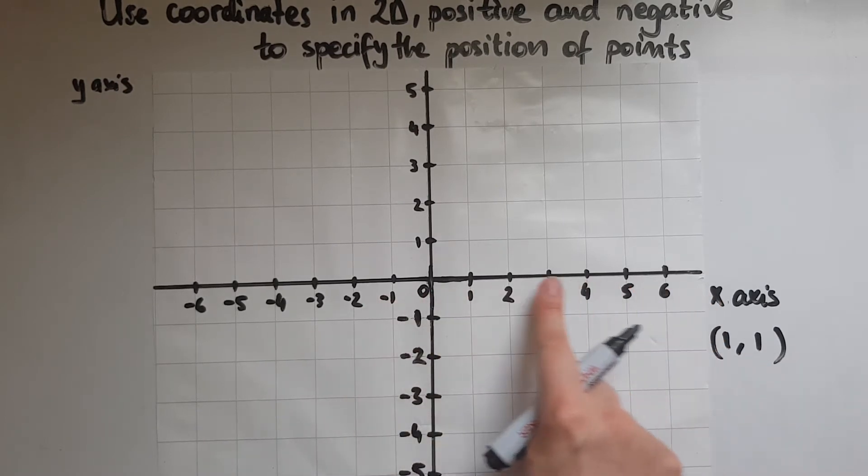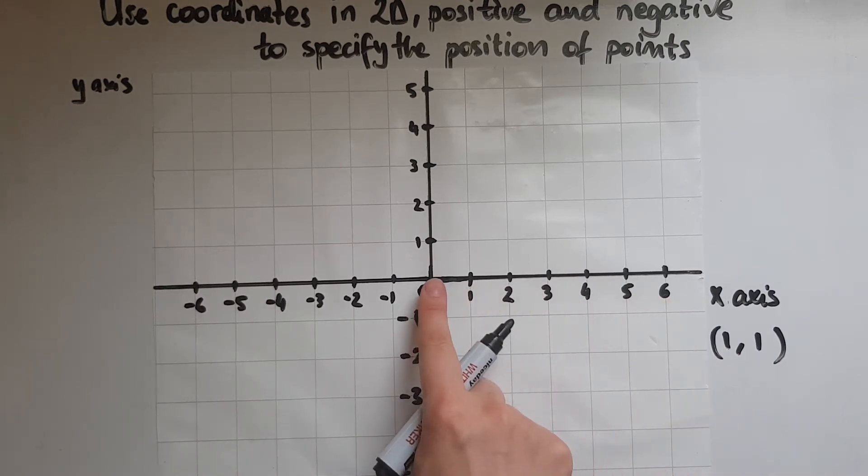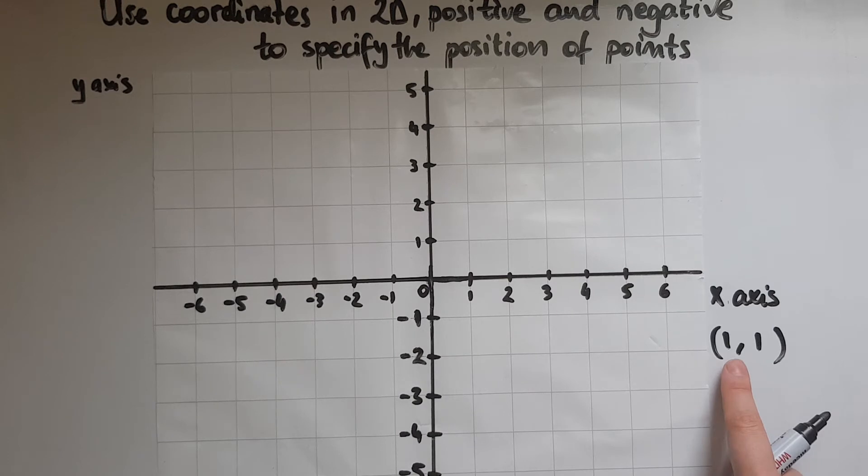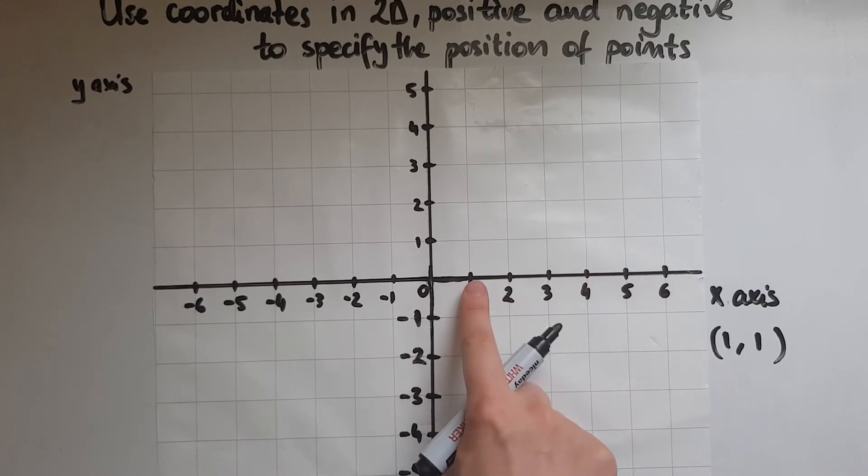First of all, we decide horizontally where we'd go, where we'd stop. Shall I stop at 0, 1, 2, minus 1, minus 2, minus 6? Where do I stop? That's the first thing I do. The first number within the brackets tells me that. Stop at 1. I need to stop here.